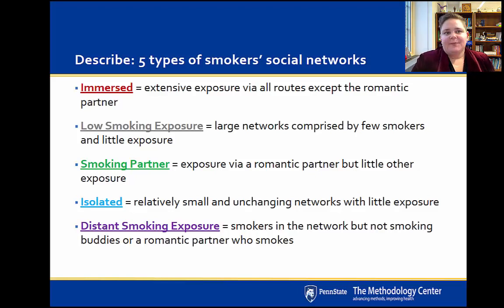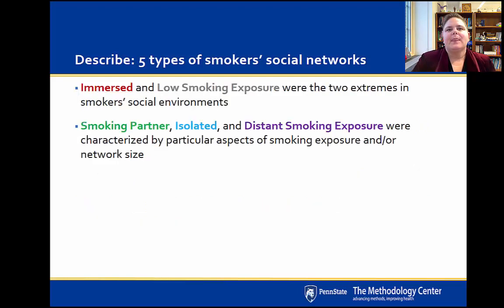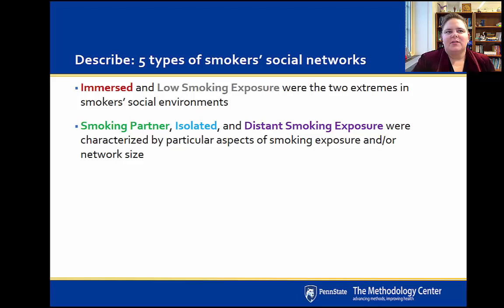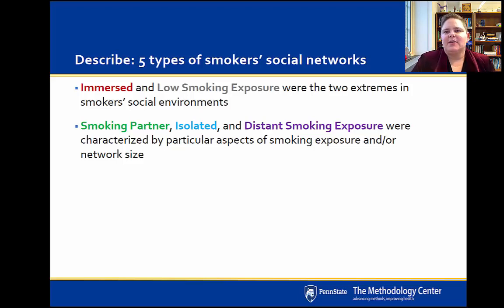Once these classes were identified, we verified that they were present at the other waves — wave one at one year post-quit and wave two at two years post-quit. The Immersed and Low Smoking Exposure classes represented the two extremes: Immersed had large networks with lots of smoking exposure, while Low Smoking Exposure had few people in the network. The Smoking Partner, Isolated, and Distant Smoking Exposure classes were characterized by particular aspects of smoking exposure and network size in between those extremes.